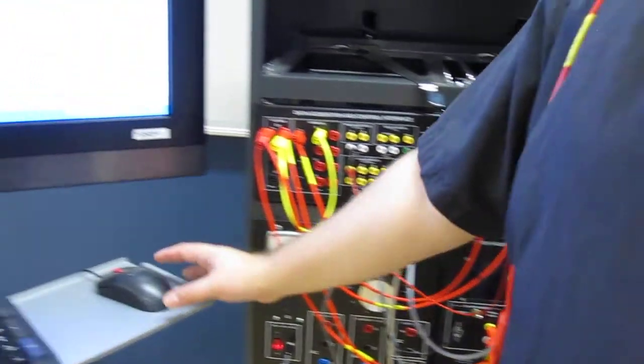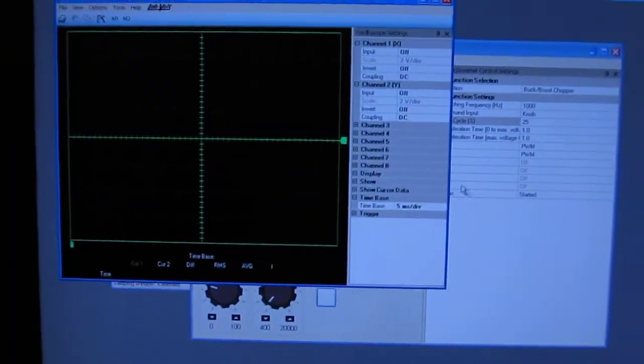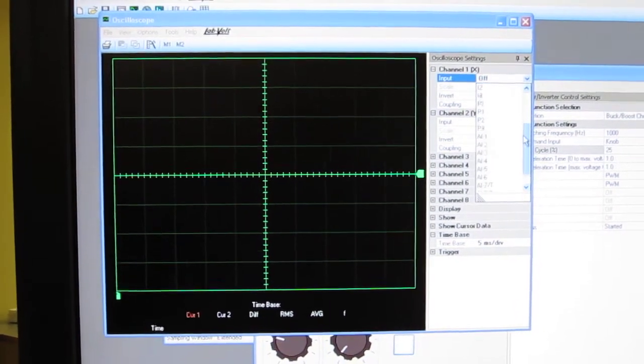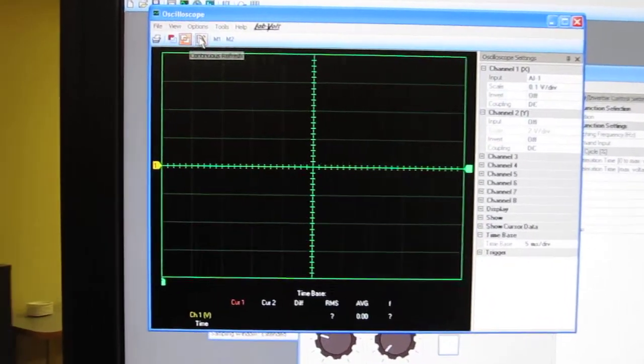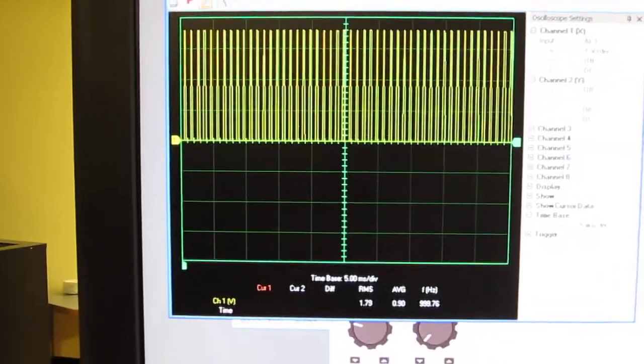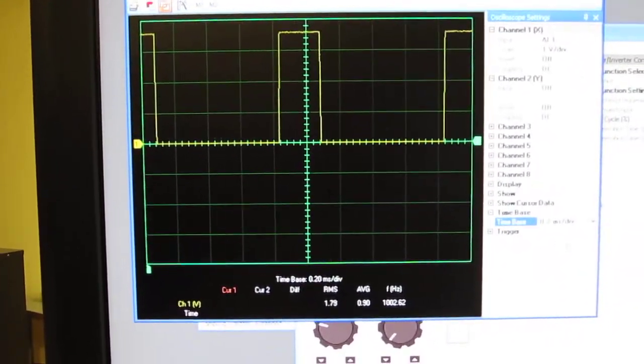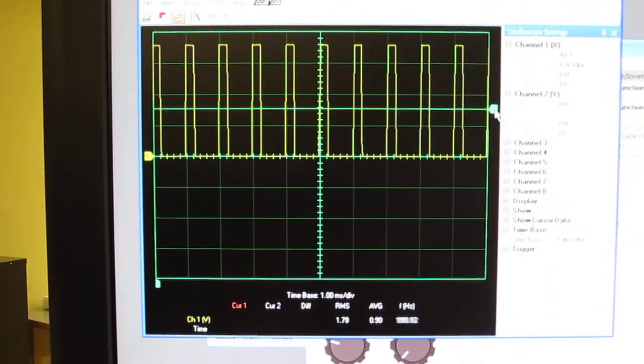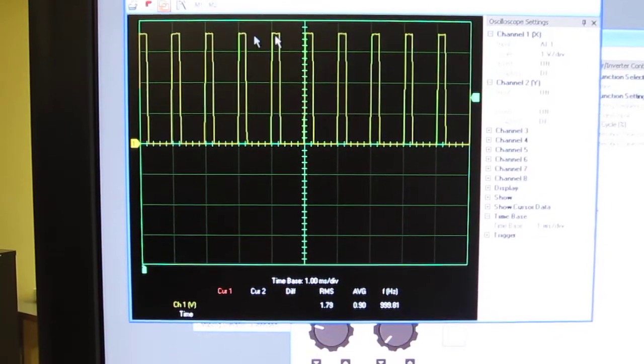Then I can go here and ask for an oscilloscope and just say on my first channel I want to look at what is on my analog input 1. I need to change my time base here, like this maybe. When I am changing, right now my duty cycle is 25%.